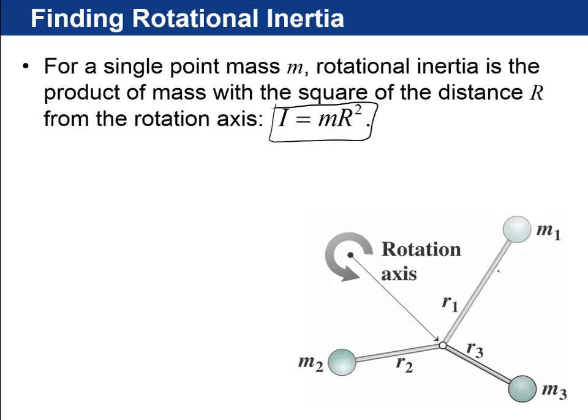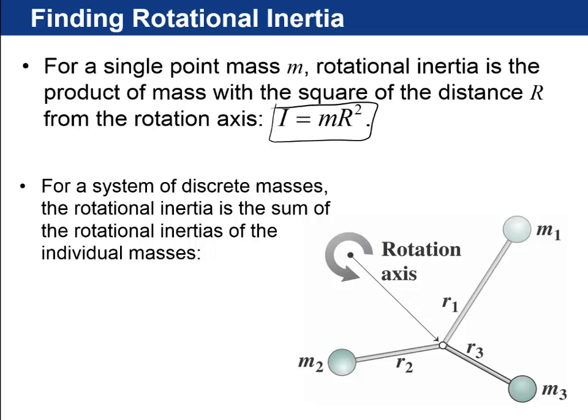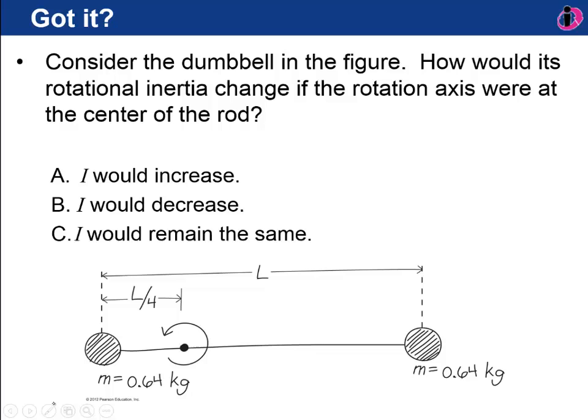If you have several particles, you sum up: I = M₁R₁² + M₂R₂² + M₃R₃². Consider a dumbbell: the rotation axis is currently at a quarter of the rod's length from one end, with two equal masses. How would its rotational inertia change if the rotation axis were moved to the center of the rod? Would it increase, decrease, or remain the same?